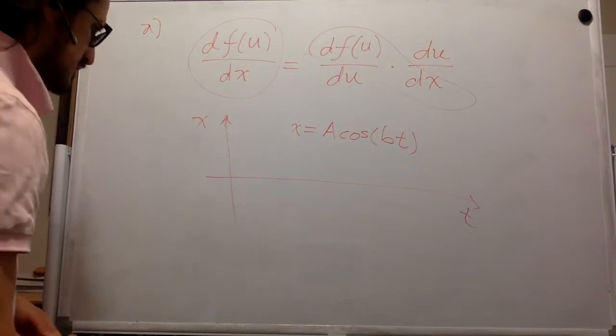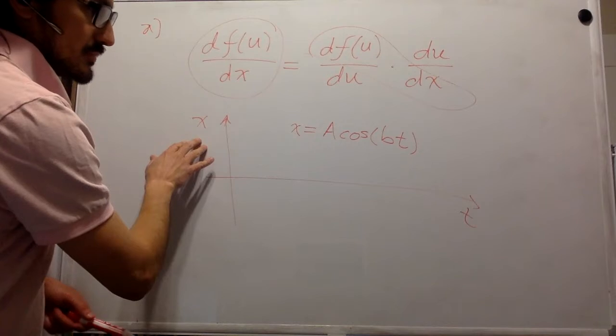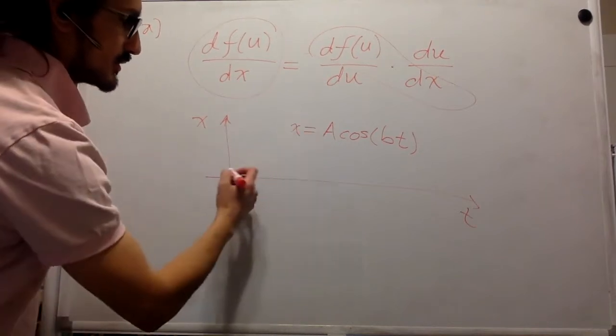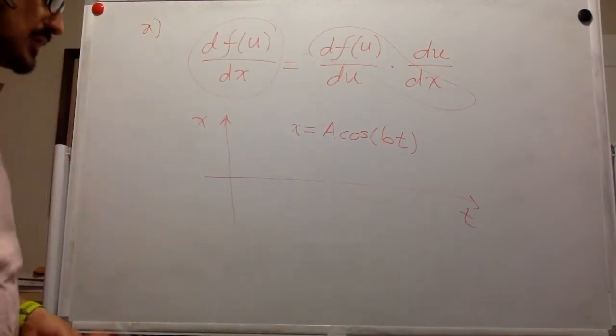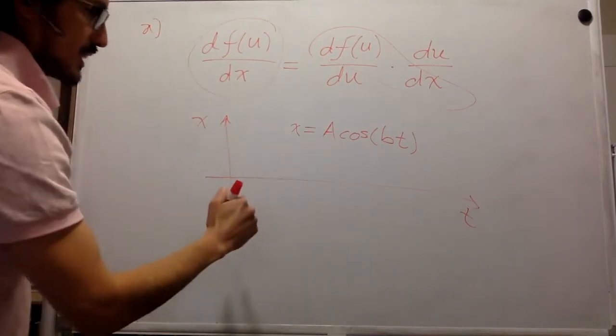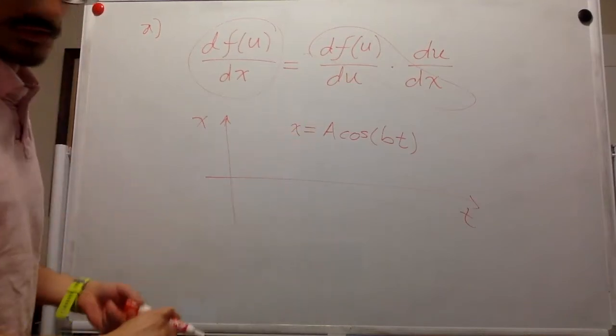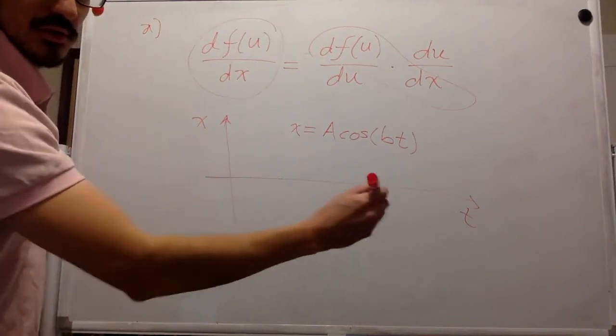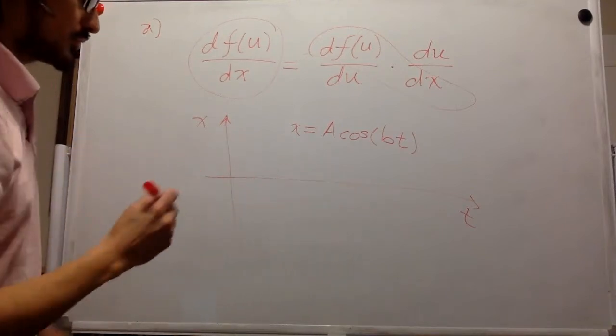So far in class we have seen situations in which the position is just a straight line or a parabola in time. This one is only slightly more complicated. It is repetitive, right? It's a cosine function. So it tells you the position in x. So if x is horizontal, then it's going to be oscillating like this, and this red thing is the object that is oscillating.